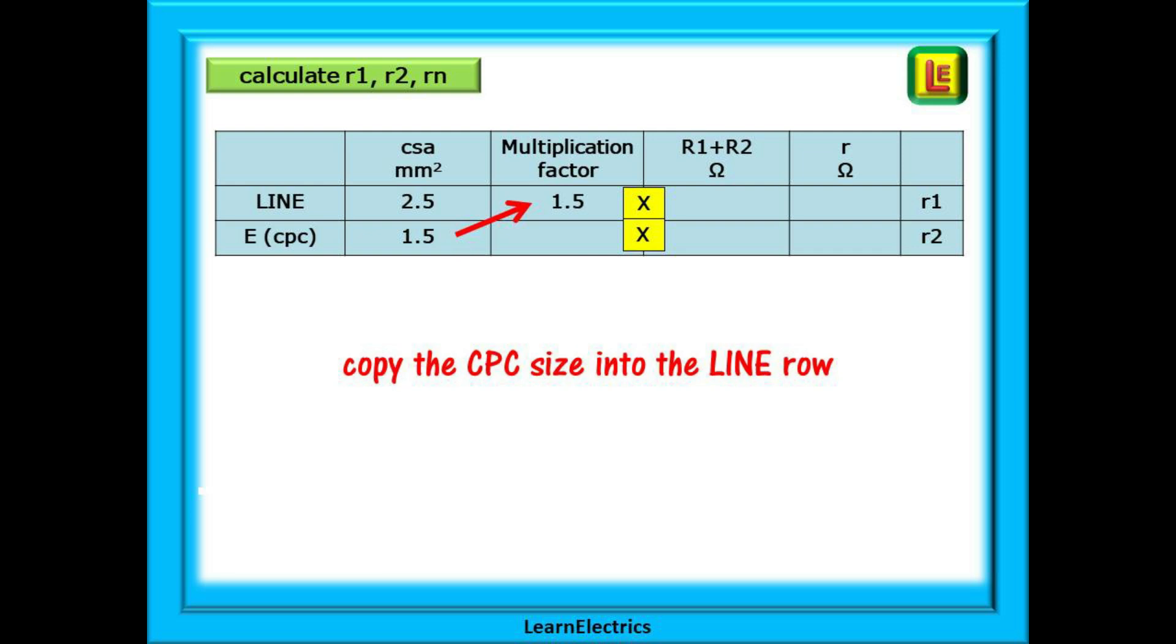Put the 1.5 for the CPC into the top row for the multiplication factor, and then the 2.5 for the line into the box on the CPC row. Enter big R1 plus big R2 that we just calculated into the column, and notice that there is a multiplication sign in yellow boxes between the two columns.